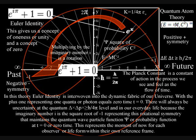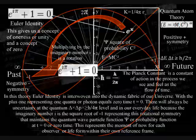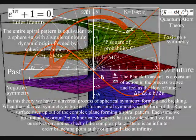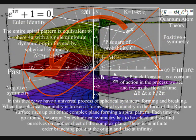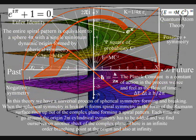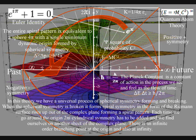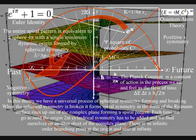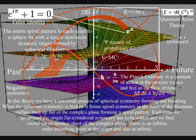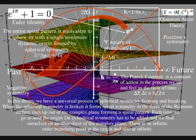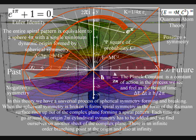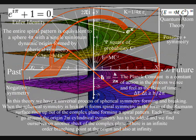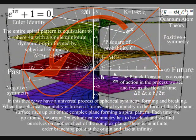To understand this further, we have to use the next diagram that shows how this spherical symmetry breaks, forming spiral symmetry, that has line symmetry, for the arrow of time. When the spherical symmetry is broken, it forms spiral symmetry, in the form of the Riemann surface rising up out of the complex plane, forming a spiral pattern. Euler's identity is at the heart of this process. The easiest way of looking at this is that the only number you could add to the number one to get zero is minus one, and this forms a rotation that breaks the spherical symmetry.